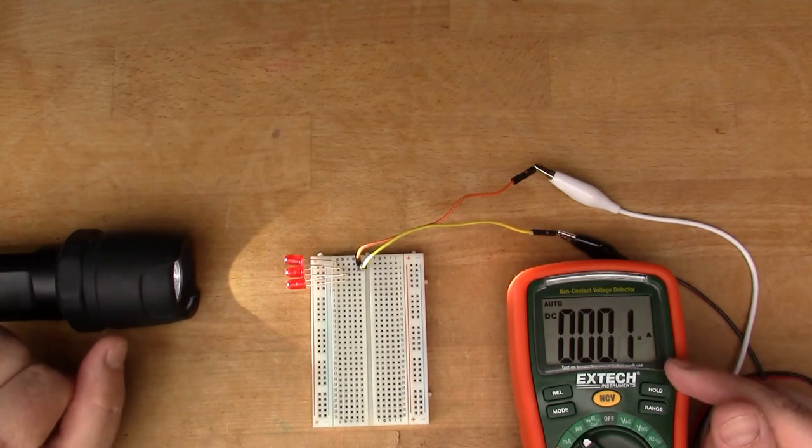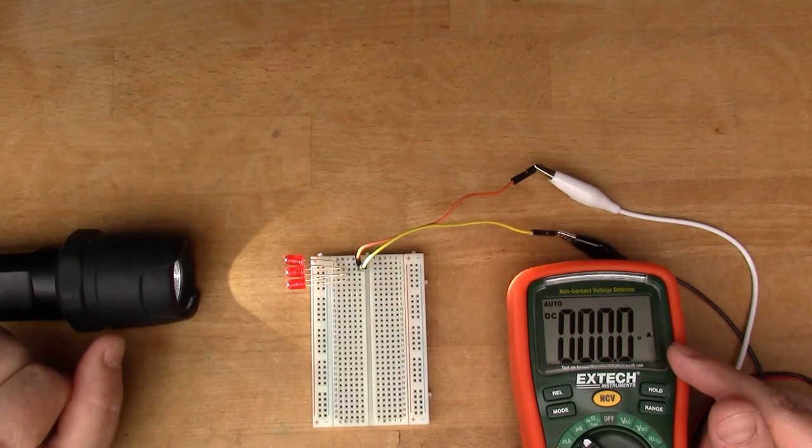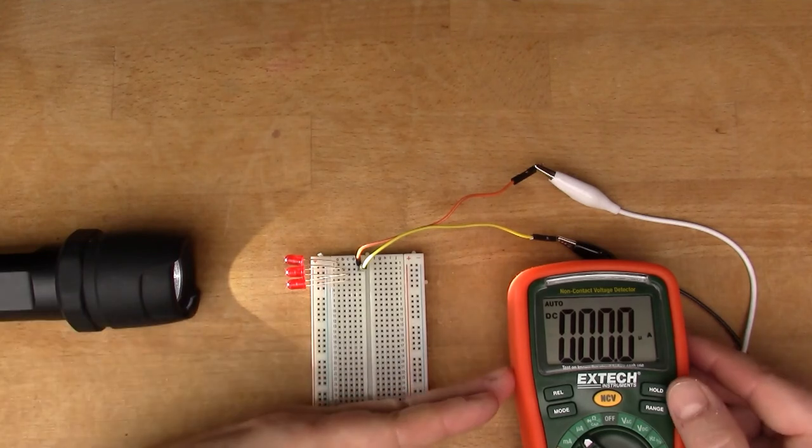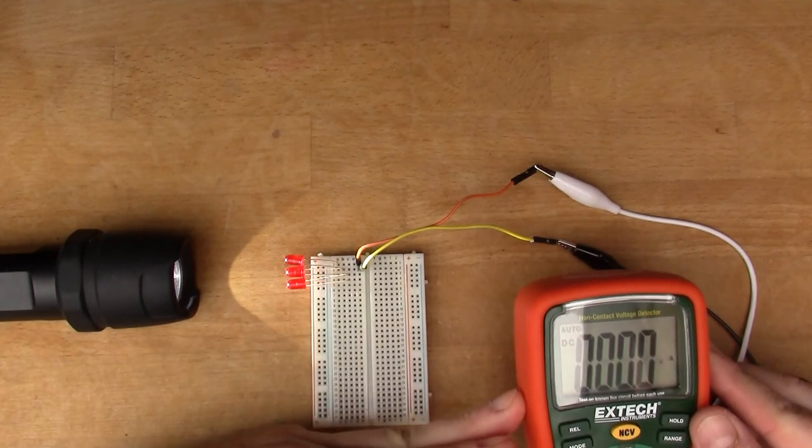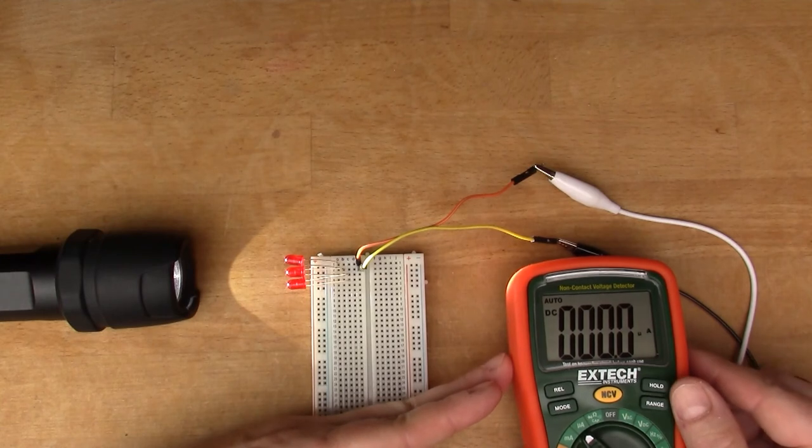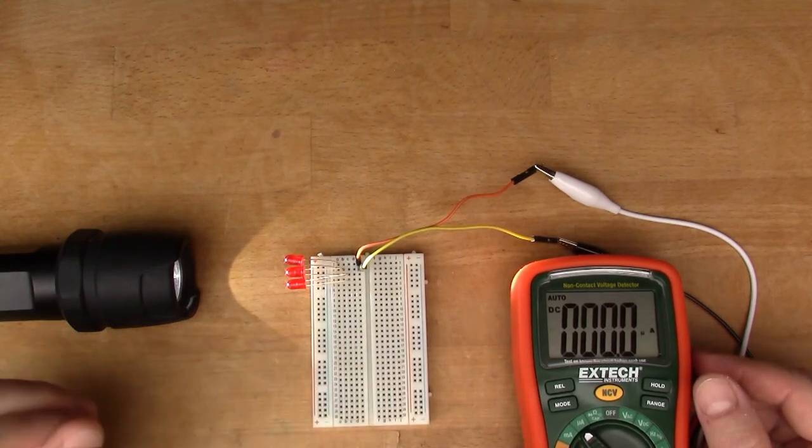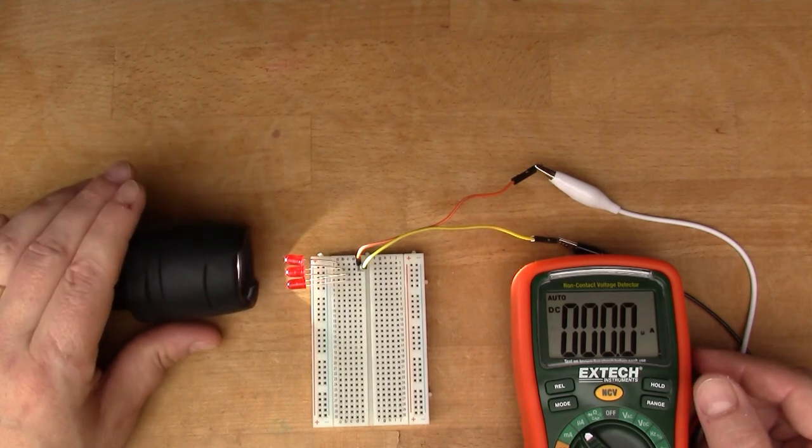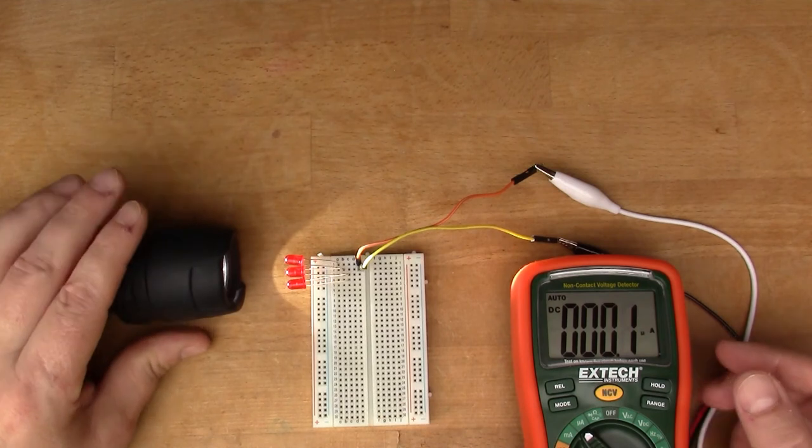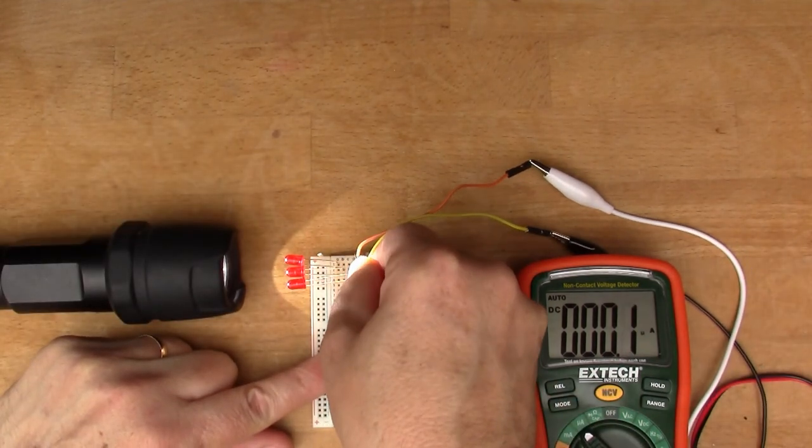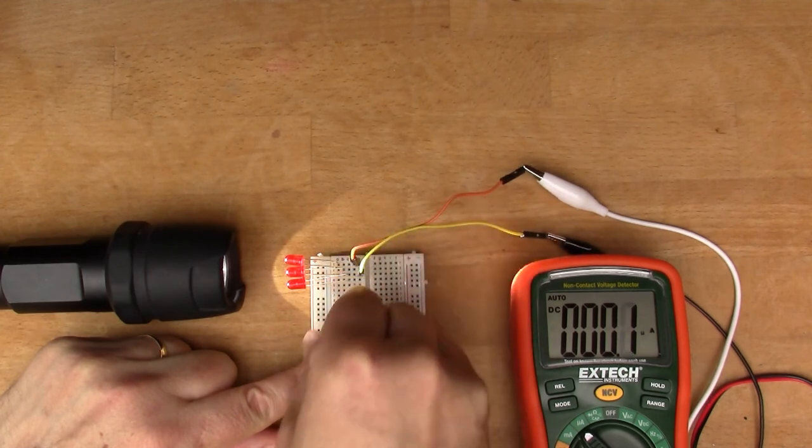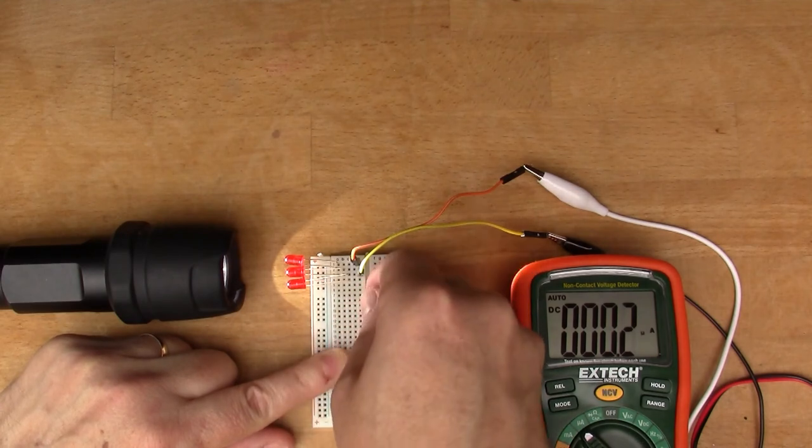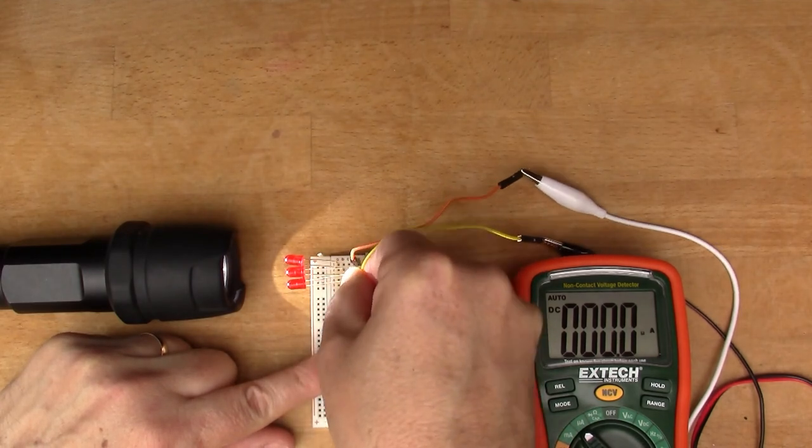Right, so we're getting a reading of, we're just about flicking on to one there. The last digit in the microamps reading, 0.1 microamps. So if we move to the second LED, I saw a two there for a second, so 0.2 microamps.